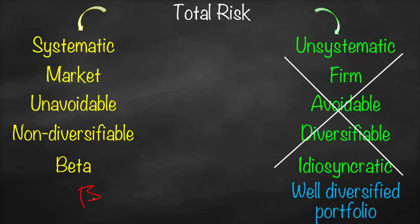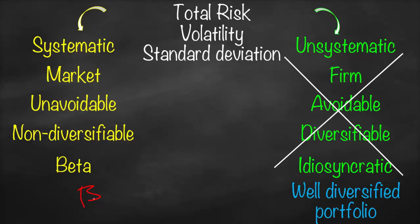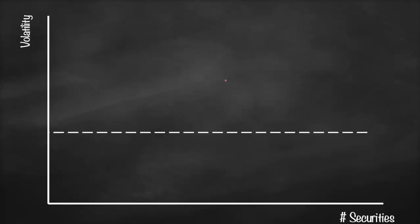Beta is a measure of systematic risk. Total risk is measured through volatility or standard deviation. Standard deviation is a statistical term while volatility is a finance term, but both are exactly the same and share the symbol sigma. On the graph, the x-axis represents number of securities and the y-axis represents volatility.